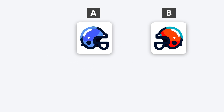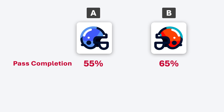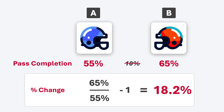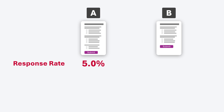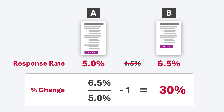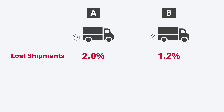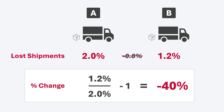Here are some additional examples of when you can use percentage change. If you're a sports fan or coach, we're looking at past completion rates for two quarterbacks — you might think there's only a 10% difference, but percentage change shows it's actually 18.2%. For an HR survey, a seeming 1.5% difference is actually a 30% improvement. And comparing lost shipment rates between two carriers, what doesn't look like much is actually a 40% reduction in lost shipments for carrier B.